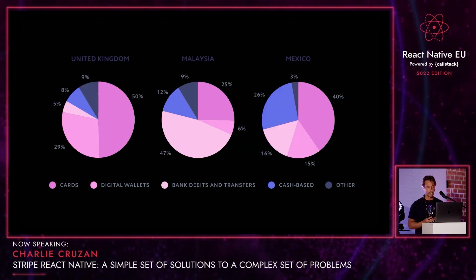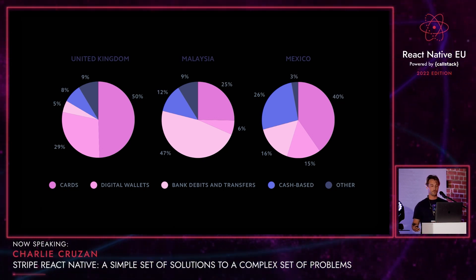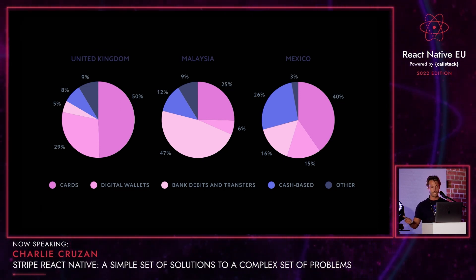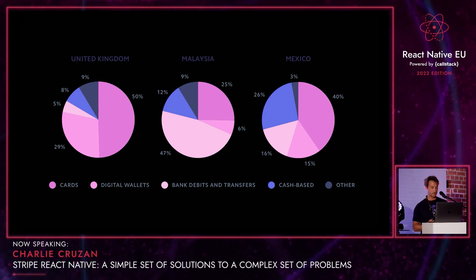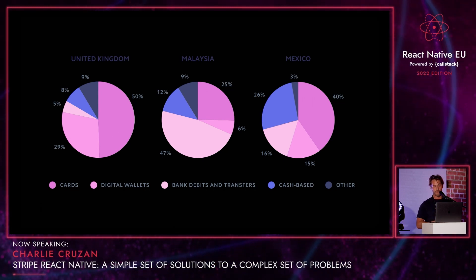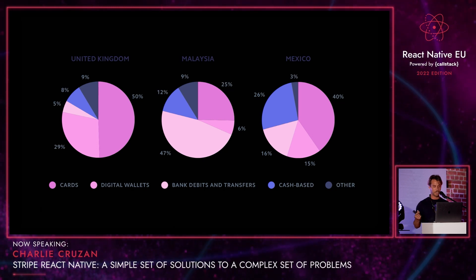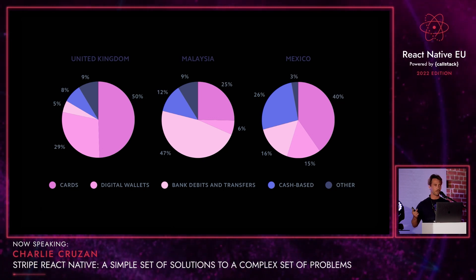Before I started at Stripe, I was very much the ignorant American that assumed the whole world just used credit cards. If you make that assumption as a business owner, you are alienating a huge portion of your user base and missing out on a lot of potential revenue. These pie charts kind of show the breakdown of different payment methods per country. The UK is mostly credit cards or Apple Pay and Google Pay. But then you look at a place like Malaysia, which is 50% bank transfers or bank debits. And then Mexico has a whole bunch of cash and OXXO, which is a voucher they use over there — which, plug, Stripe now supports.